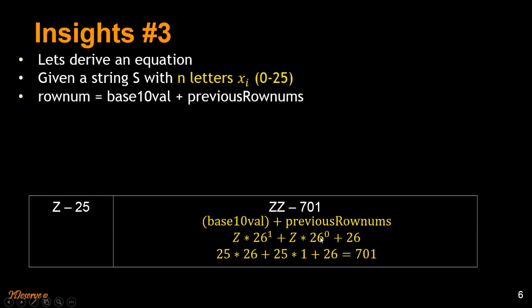So what is the base 10 value? How do we come up with an equation looking at this? Here's the equation for that. So n is the number of letters in string S. Xn minus 1 is the letter at n minus 1th place. So there are two letters here. So this is 0 and this is 1, where n is equal to 2.